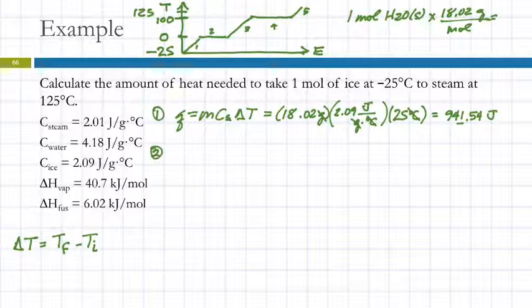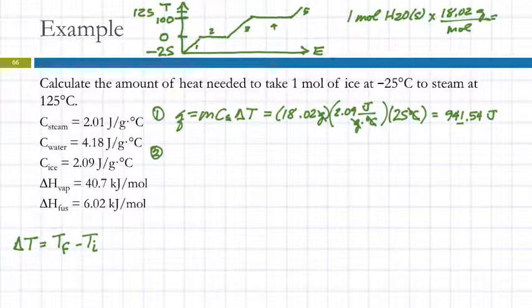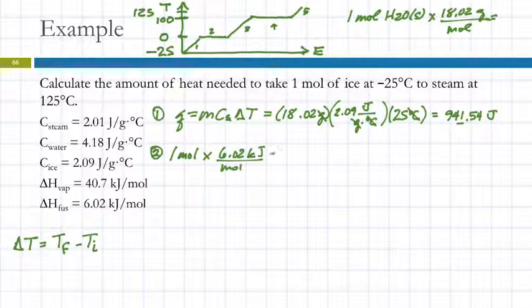For line segment 2, this is horizontal. If you try to use Q equals MC delta T, the temperature change is zero, so that won't work. We need the heat of fusion because this is melting. We take the amount in moles — 1 mole — times the heat of fusion, 6.02 kilojoules per mole. That gives us 6.02 kilojoules.